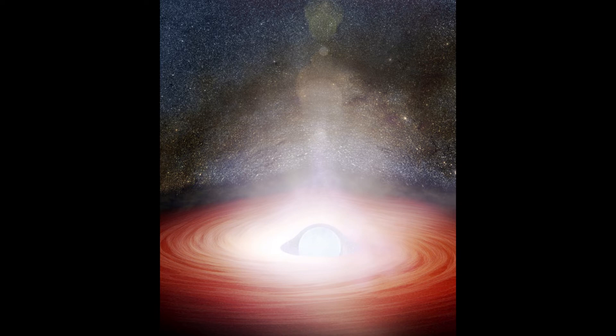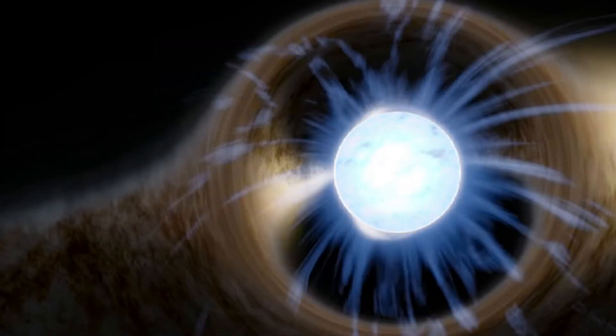After the supernova explosion, if the core at the center of a supernova is between about 1.4 and 3 solar masses, the collapse continues until electrons and protons combine to form neutrons, producing a neutron star.